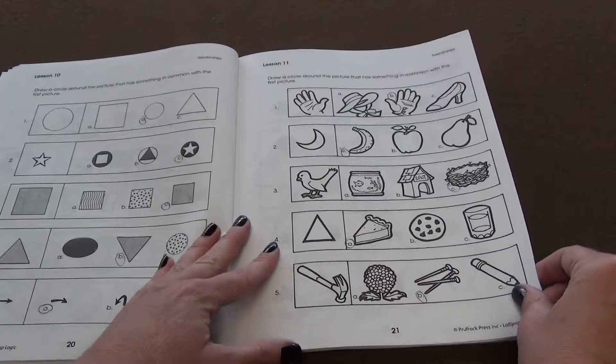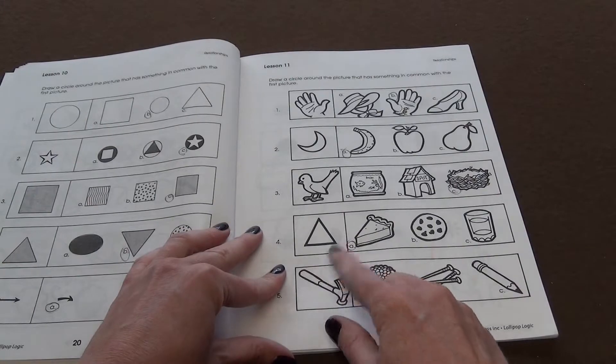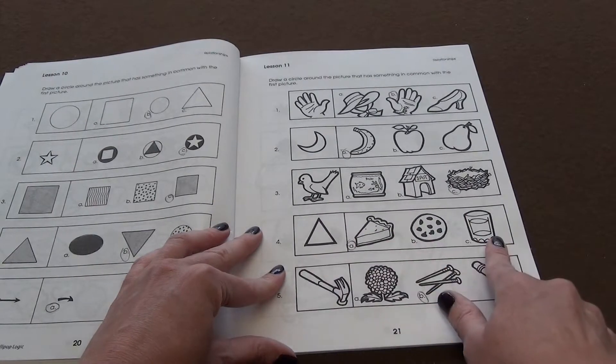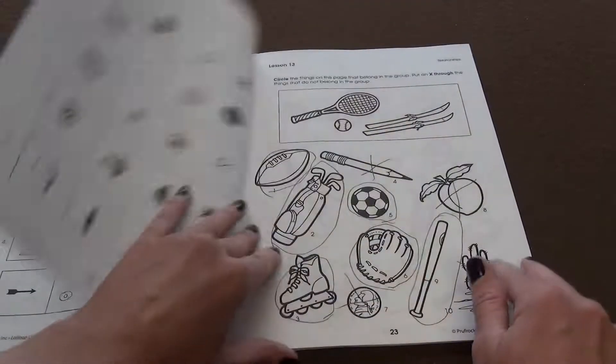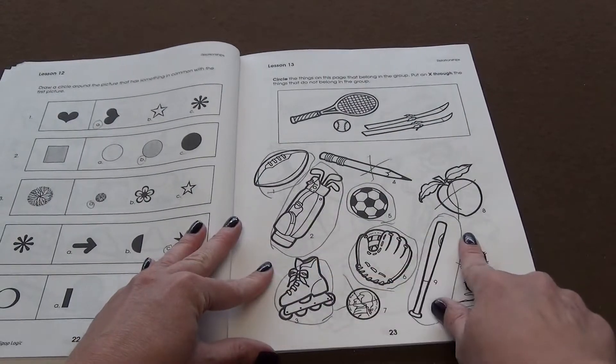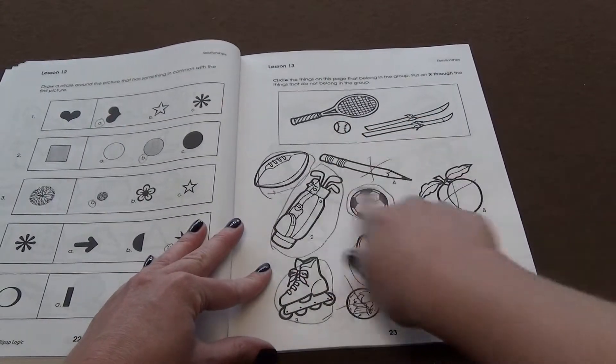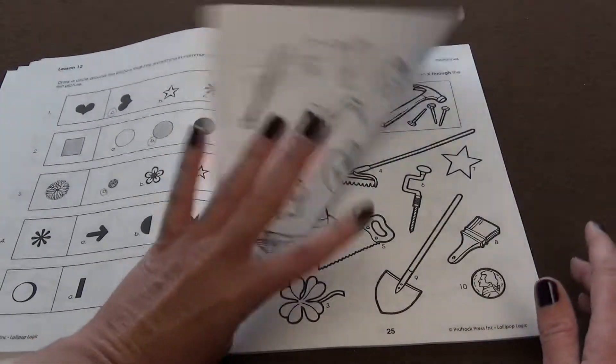And then we move on to relationships. And then how is the triangle related to one of these items. Same thing here. We've got how are these items related to the items in the box.